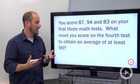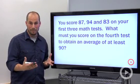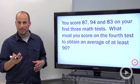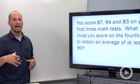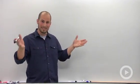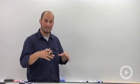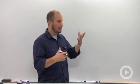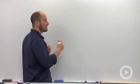you score on your fourth test to obtain an average of at least 90? The trick for this one is to remember how you calculate average. You add up all the elements that you have together, divided by the number that you're dealing with. So to find the average of these tests, we